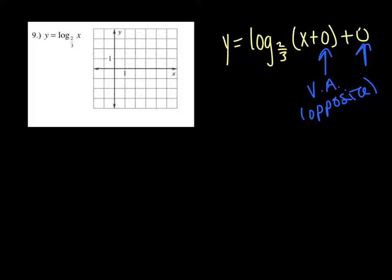In this case, your vertical asymptote is not moving, so it is going to stay at 0. But we need to find values for this. Here's the weird thing with log functions.